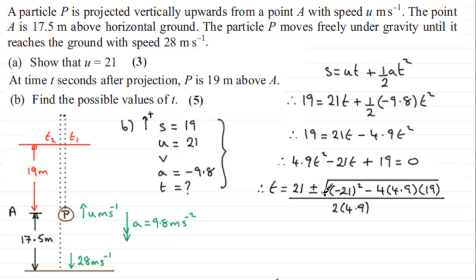so if I take the negative value, you'll find it will give me T1, the first time when P comes up through here and has a displacement of 19 meters. The plus value, when we take it, will give us the second value of T, and that would be T2.